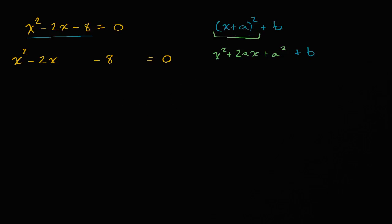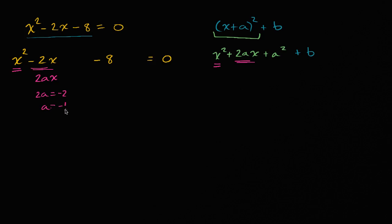Matching our terms: x squared matches x squared. Then 2Ax matches negative 2x, so 2A equals negative 2, meaning A equals negative 1. Another way to think about it: A is going to be half of your first-degree coefficient, the coefficient on the x term. The coefficient on x is negative 2, so half of that is negative 1.